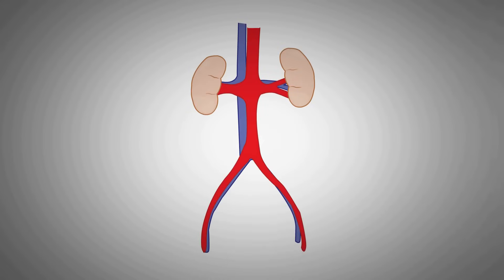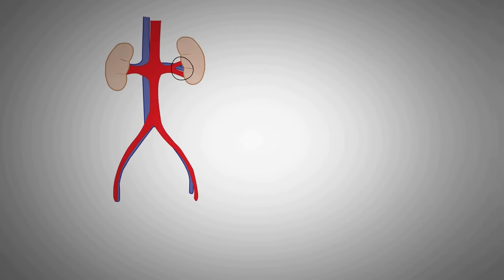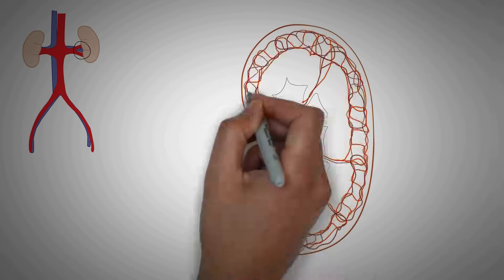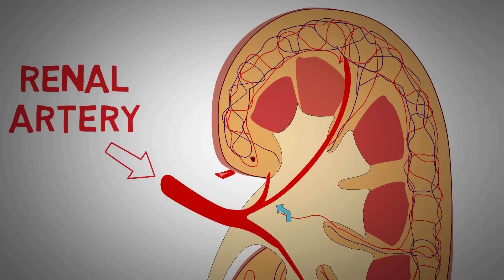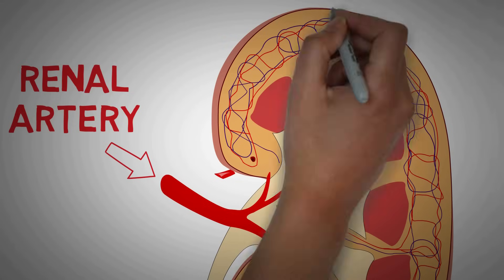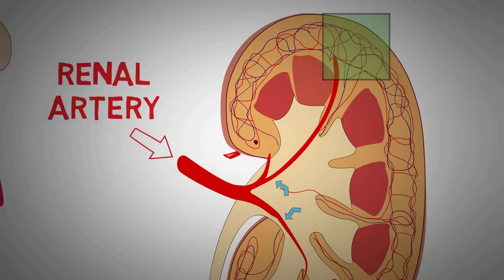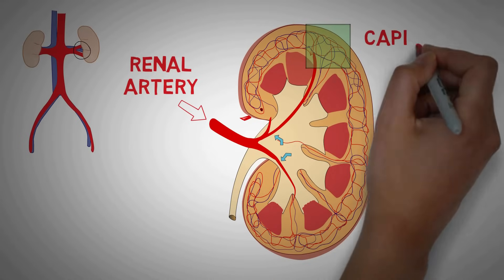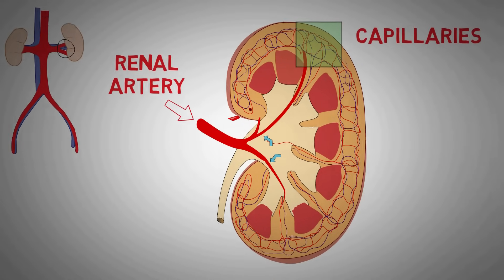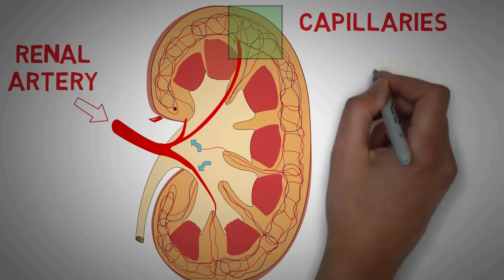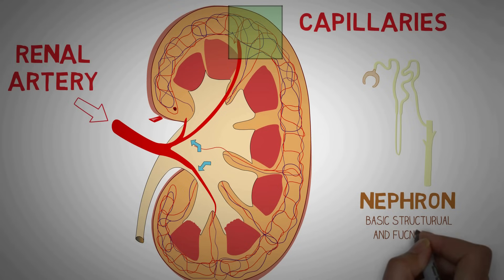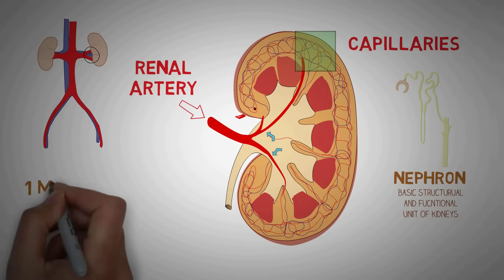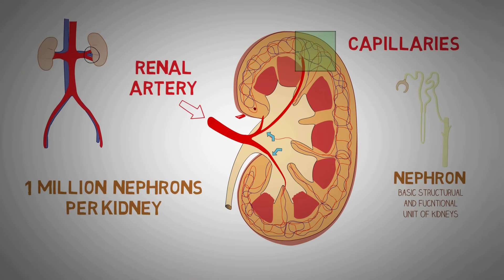The hilum is the point where the blood vessels enter and leave the kidney. The blood enters the kidney through the renal artery. After the renal artery enters the kidney, it gets divided into many small branches. These small branches ultimately go to the cortex area and divide into many smaller branches known as capillaries. The cortex region contains the most number of nephrons in the kidney. The nephron is the basic functional unit of the kidney and each kidney contains approximately 1 million nephrons. This is the main structure that filters the blood in the kidney.